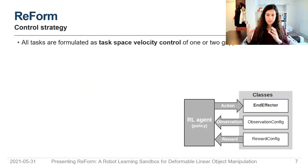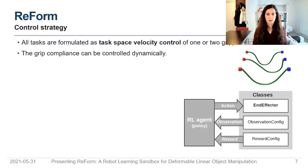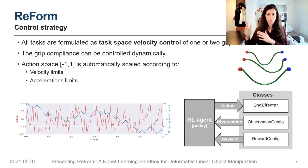ReForm has three classes. One of them is the end effector class, which defines how we control the object. It can be with one or two grippers, and the compliance of the grasp can also be controlled. There is automatic scaling so that the reinforcement learning agent can always learn between minus one and one, with scaling for velocity and accelerations that make sense for the simulation.